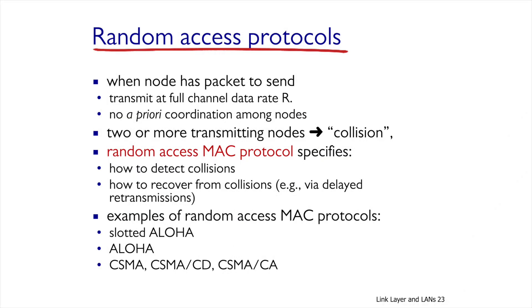The previous class of MAC protocols wasn't able to solve the following problem: if we had one node ready to transmit, then it could have used the entire bandwidth. We will look at the second class of MAC protocols that try to solve this issue. They do not require any coordination between the nodes, but as a result, collisions may happen. The protocols from this class need to detect collisions and recover from them. Examples include Slotted Aloha, Aloha, Carrier Sense Multiple Access (CSMA), CSMA with Collision Detection (CSMA/CD), and CSMA with Collision Avoidance (CSMA/CA).